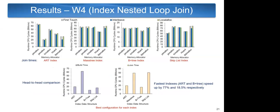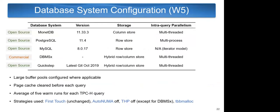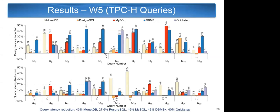For W4, we evaluate an index nested loop join using various index data structures, varying the memory allocator and placement policy for each. The fastest two indexes are ART and the B+ tree, sped up by 77% and 18.5% respectively. For W5, we applied our findings to five different database systems running all 22 TPCH queries, measuring query latency reduction. Overall, we see good reductions in query latencies across all systems and queries.